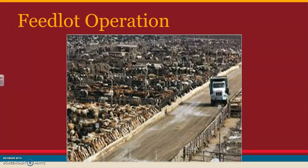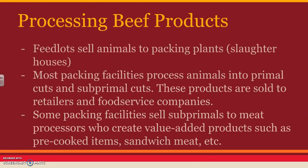This is what a very large feedlot operation looks like. Feedlots typically raise grain-fed beef cattle and are not on as much pasture. Feedlots then sell the animals to packing plants, more commonly known as slaughterhouses. Most packing facilities process the animals into what are called primal cuts and then subprimal cuts. Those products are then sold to retailers and food service companies — places like grocery stores and butcher shops.